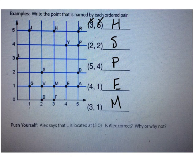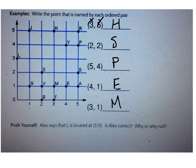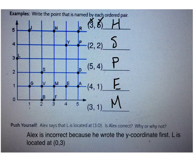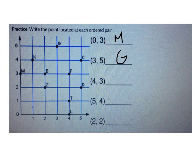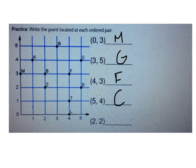Alex says that L is located at (3, 0). Is Alex correct? Why or why not? Alex is incorrect because he wrote the y-coordinate first. Now you try it — make sure you write your answers as a capital letter. Which point is at (0, 3)? It's M. Which point is at (3, 5)? It's G. Which point is at (4, 3)? It's F. Which point is at (5, 4)? It's C. Which point is at (2, 2)? It's Z.